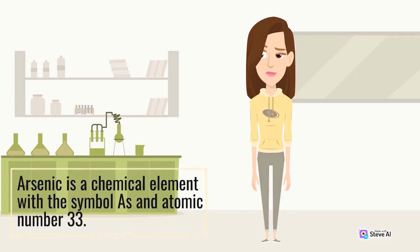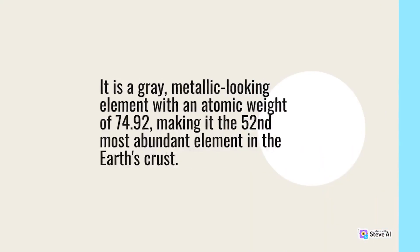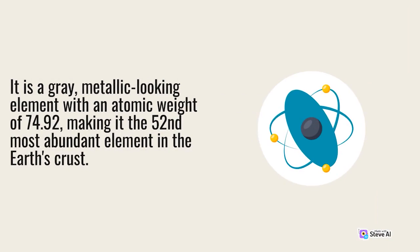Arsenic is a chemical element with symbol As and atomic number 33. It is a gray, metallic-looking element with an atomic weight of 74.92, making it the 52nd most abundant element in the Earth's crust.